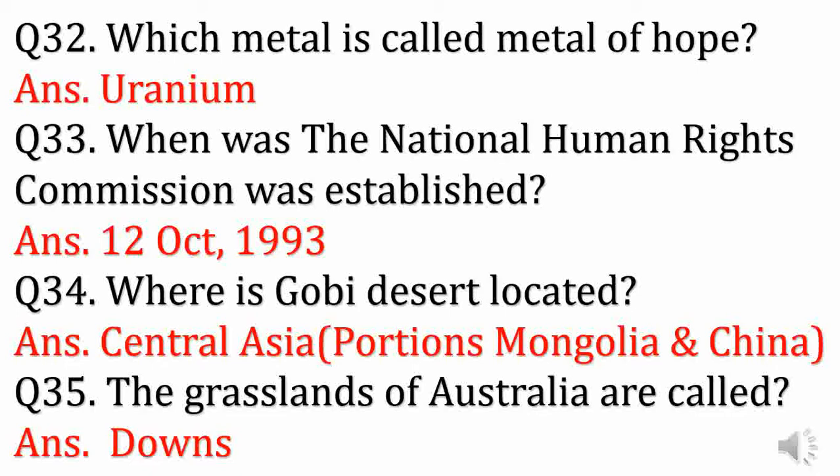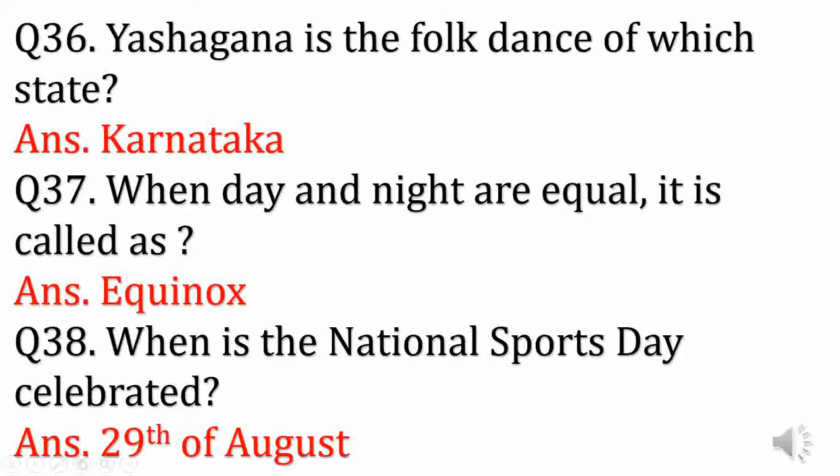When was the National Human Rights Commission established? Answer: Central Asia. The grasslands of Australia are called? Answer: Downs.